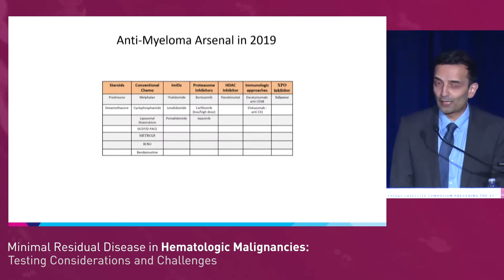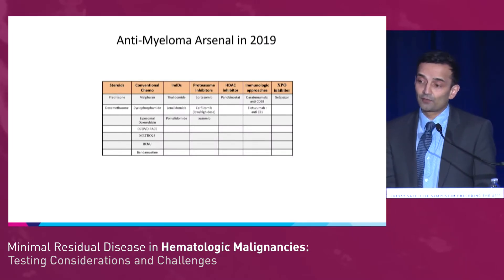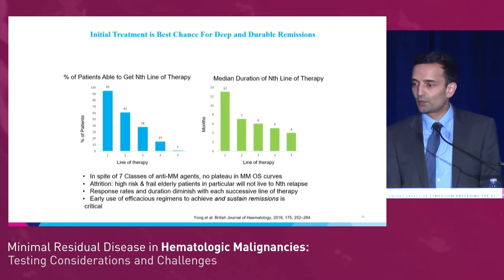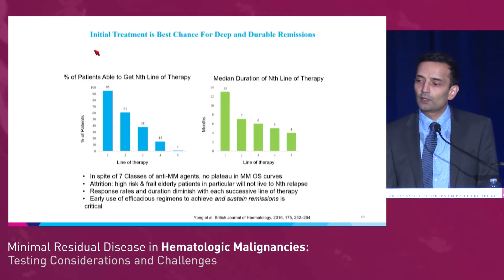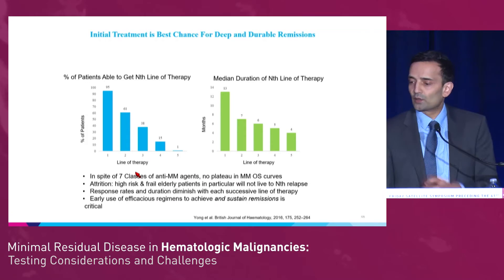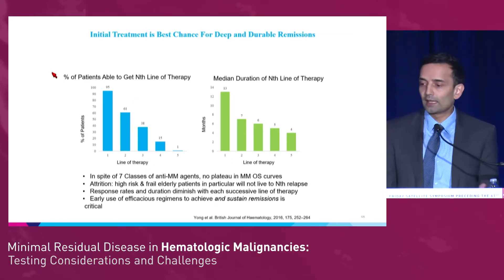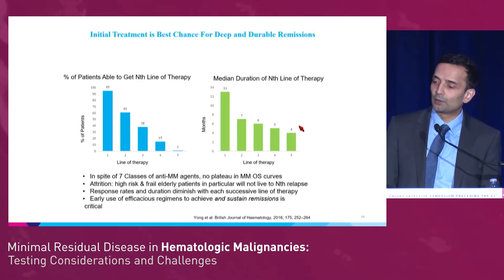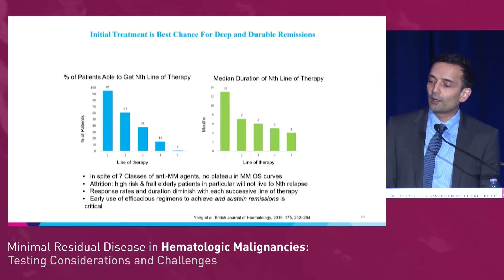A lot of new drug approvals in myeloma — we now have seven different categories of drugs, so it's tremendous progress. But the initial treatment is really our best chance of getting disease control and durable remission. The number of patients that get to the end line of therapy continually diminishes, and the duration of therapy also diminishes — so diminishing returns with each subsequent relapse. Our best chance of getting long-term disease control is really early on.